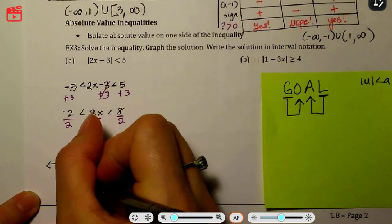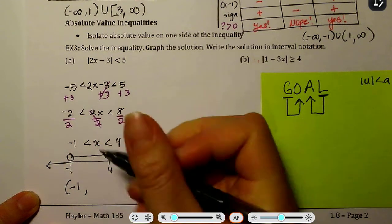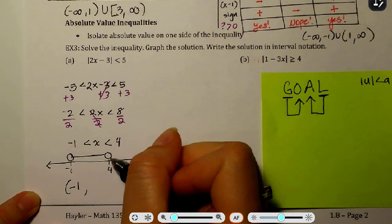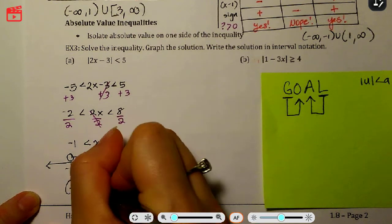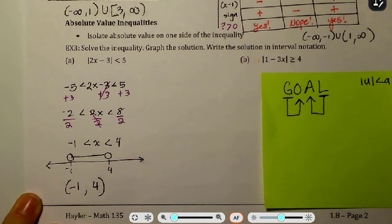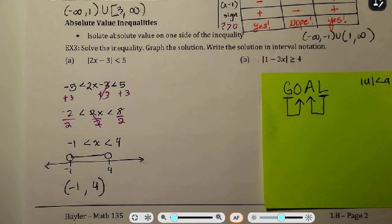So with interval notation, we're starting at negative 1 but not including it, and then we're going until 4 and also not including it. Okay, so that was an AND statement, we split it into an AND.